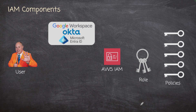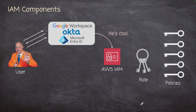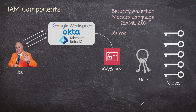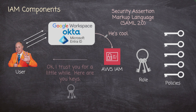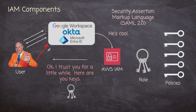This is a very similar process when using a third-party identity management system. You have that same type of conversation, and the third-party system eventually tells IAM the user is verified and is who they say they are. It generally uses SAML 2.0 to do this — that's how these systems get integrated. Then IAM hands over the keys and trusts you for a period of time. It's not indefinite access; you'll have to reauthorize yourself after that period.